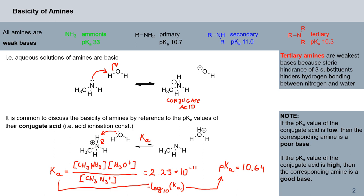So, as a general note, if the pKa value of a conjugate acid is low, then the corresponding amine is a poor base, and vice versa. Here you have some overview of primary, secondary, and tertiary amine pKa values.